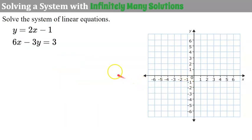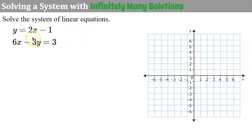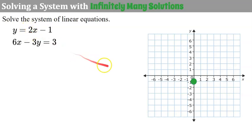Now let's look at a system that has infinitely many solutions. When we solve the system, I'm going to graph it first so you have a visual representation. The first equation has a y-intercept of negative 1 — I'll plot that point. With a slope of 2, I rise 2 and run 1 and connect my points.